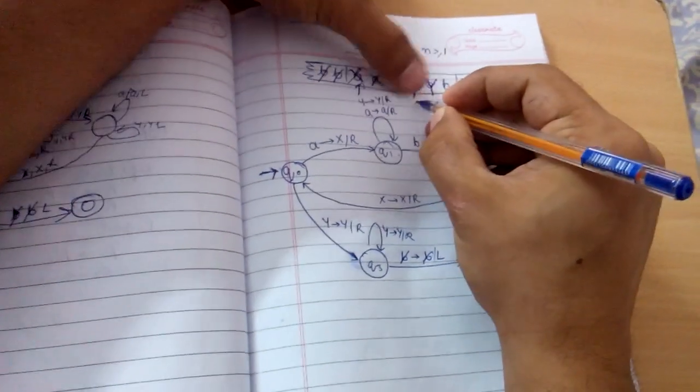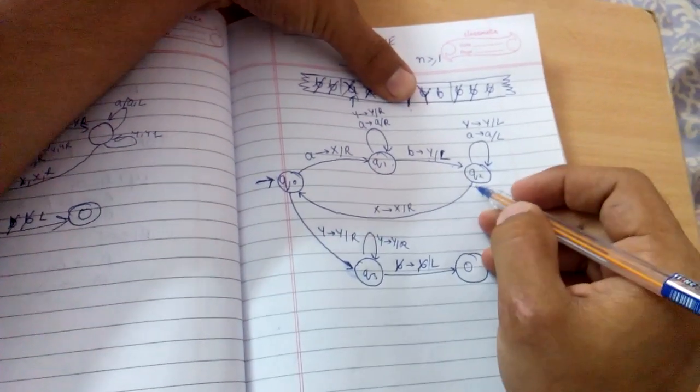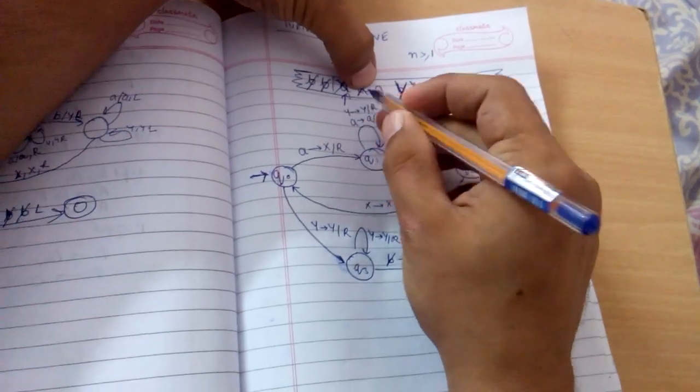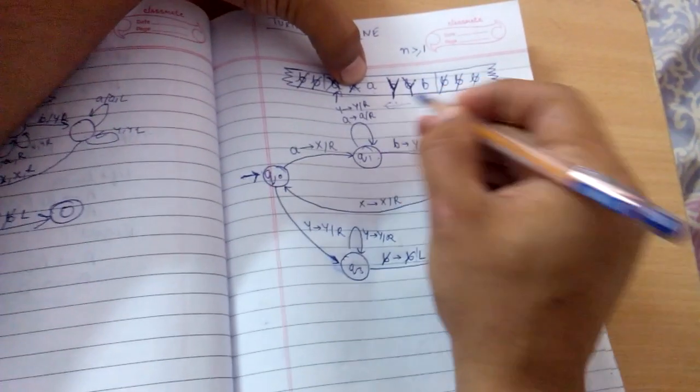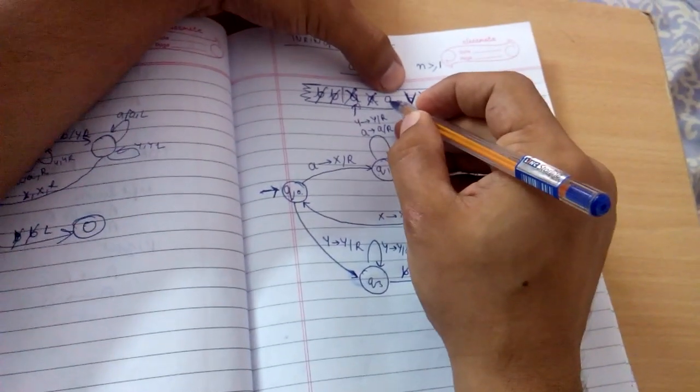Then we again move to the left and go all the way to the first x we encounter. When we encounter the x, the procedure follows again.